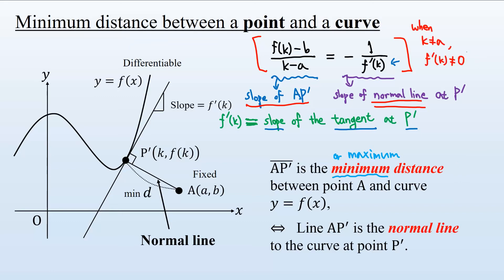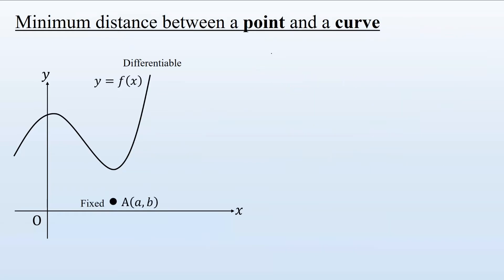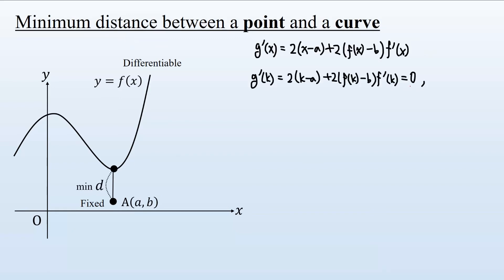But this relation is only valid when k is not equal to a and f'(k) is non-zero. What about the other case? Let's handle that. The minimum distance occurs when g'(x) equals zero. Suppose g'(x) becomes zero at x equals k, representing point P', but now k equals a.